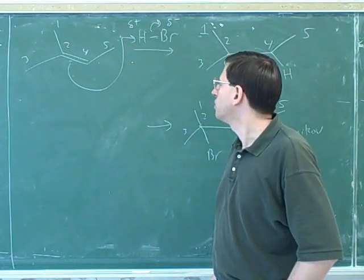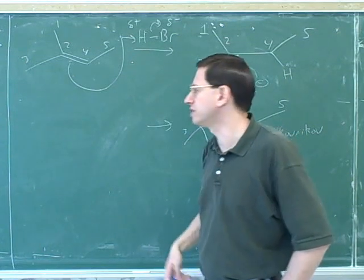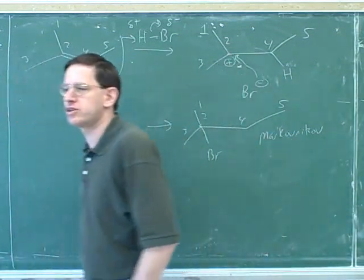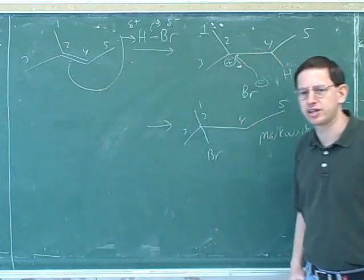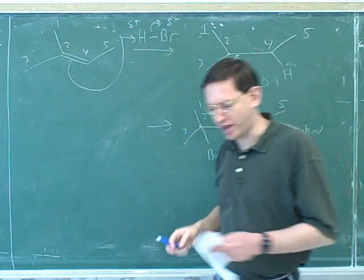What type of electrophilic addition is it? Well, we called it hydrohalogenation. We would call this hydrohalogenation. Why is hydrohalogenation a good name for this reaction? Because it has hydrogen and it has a halogen. Yeah, first the hydrogen attacks and then the halogen. Okay.